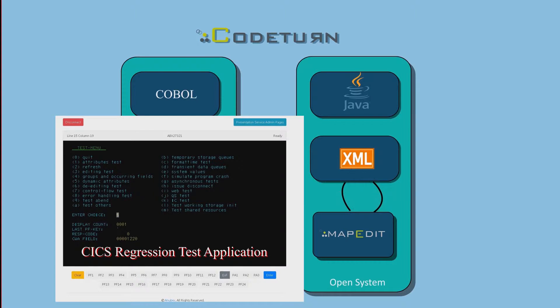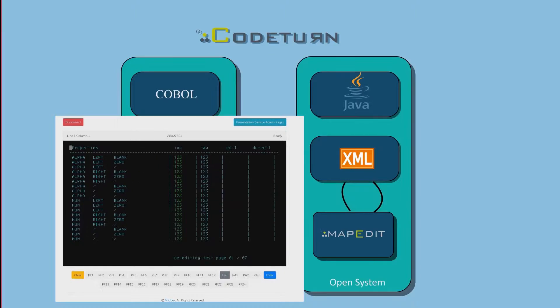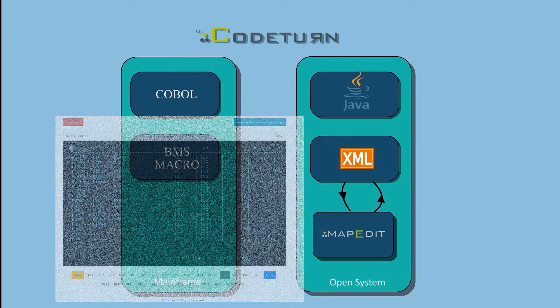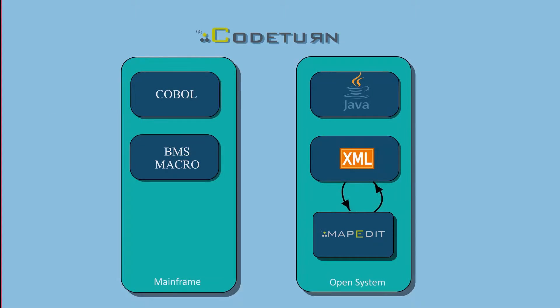The application contains different programs and maps, and one of these defines the different BMS map attributes and their behavior. The correct migration of all these is vital for a successful transformation project.